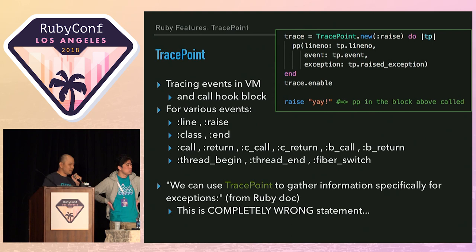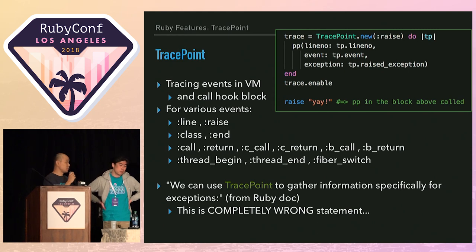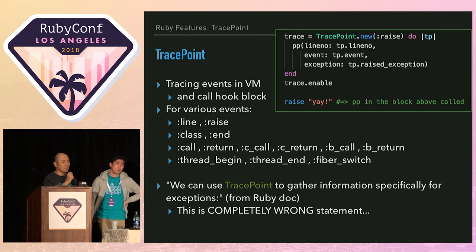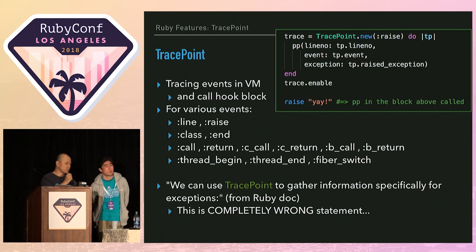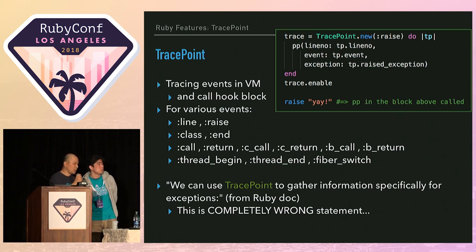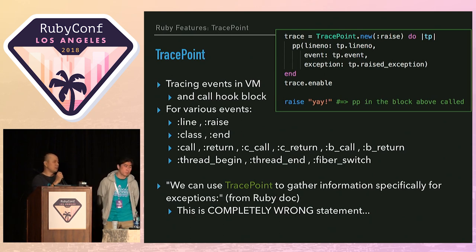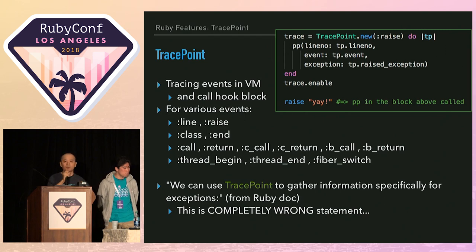Next is TracePoint. The sample code shows TracePoint usage. TracePoint is used to trace events in the Ruby virtual machine and call hooks about those events. We can hook many events: line, class and end for the beginning and end of class definition, call and return for Ruby method calls, c_call and c_return for methods implemented in C, b_call and b_return for blocks, and also thread_begin, thread_end, and fiber_switch.